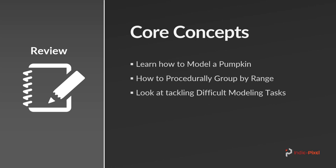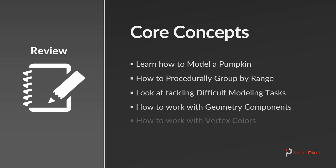Then we're going to look at how we work with geometry components — things like points, primitives, vertices, and detail attributes. Don't let it deter you, it's quite simple. And finally, we're going to finish up our base pumpkin by looking at some cool vertex color tricks and how we can blur them together to get some really nice smooth-looking vertex colors. Let's get started.